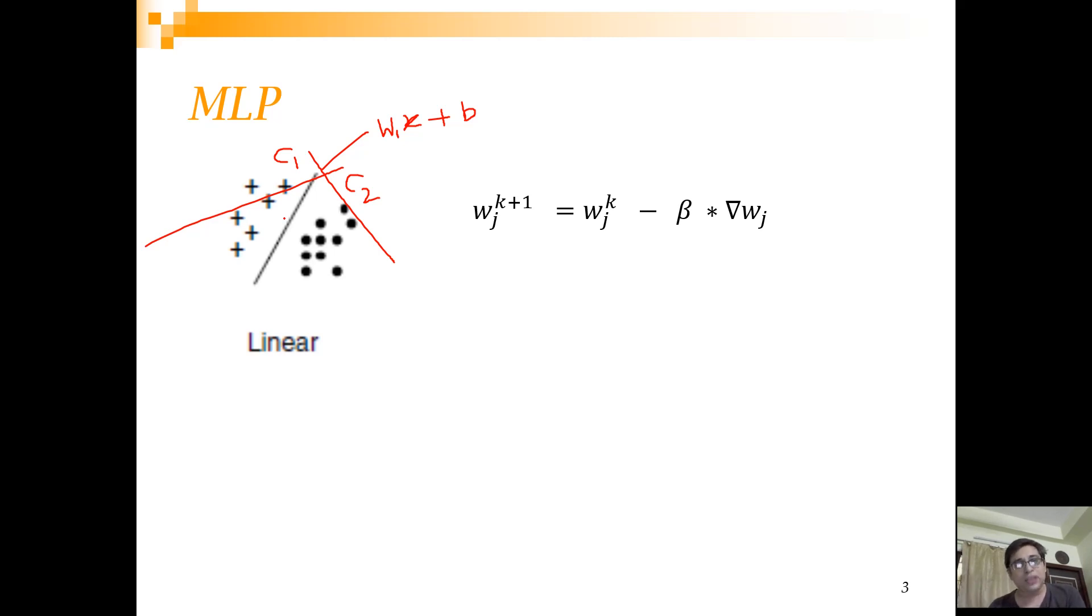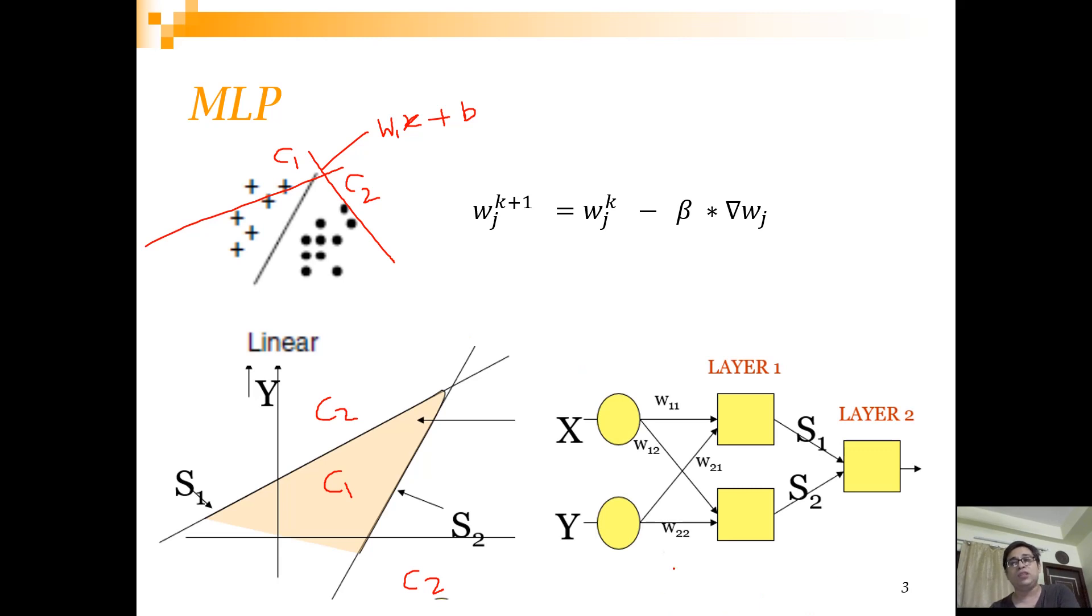Now, the question that can come to your mind is: is perceptron universal and can it be used for any classification problem? Here is an example where perceptron fails. We can call this area as class C1 and this area as class C2. How can we use perceptron to find such decision regions? If you think intuitively, you can understand that probably one perceptron can be used to draw this line and another perceptron can be used to draw this line.